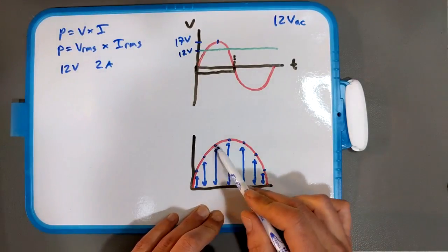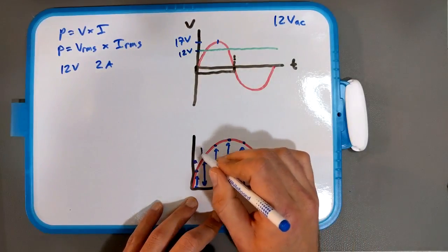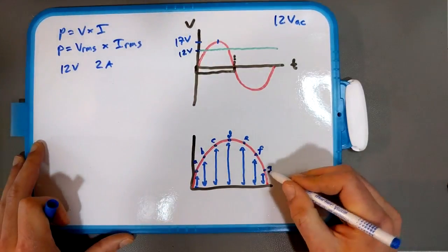So what you're actually doing is measuring these points on the waveform. Okay, so you have one, two, three, four, five, six, seven points. So we'll call these like A, B, C, D, E, F, and G, right?